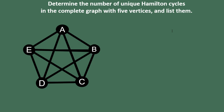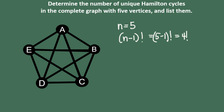Now let's count and list all of the unique Hamilton cycles in a complete graph with five vertices. We know that if the number of vertices n is five, then the number of unique Hamilton cycles will be (n-1)!, which is (5-1)! or 4!. Remember, all factorial means is to multiply from four all the way down to one: 4×3=12, ×2=24. So we can expect to have 24 Hamilton cycles. You can see the number of cycles grows very rapidly when we increase the number of vertices.